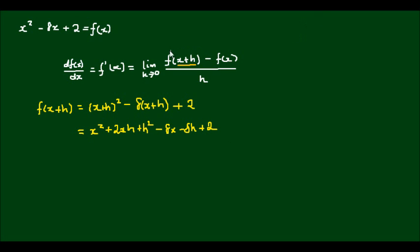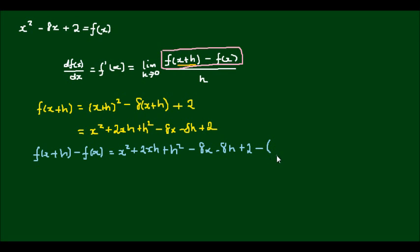So now let's evaluate the top of the numerator function. So f(x+h) minus f(x) is equal to x squared plus 2xh plus h squared minus 8x minus 8h plus 2 minus x squared minus 8x plus 2.